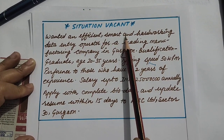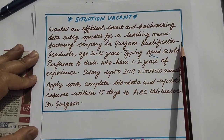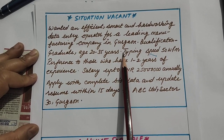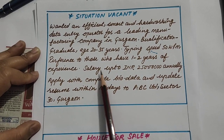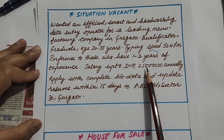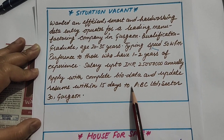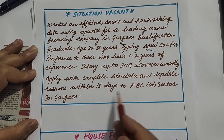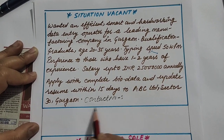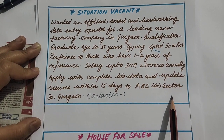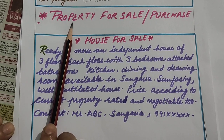Here is one more sample of situation vacant: Wanted, an efficient, smart and hard-working data entry operator for a leading manufacturing company in Gurgaon. Qualification: graduate. Age: 20 to 35 years. Typing speed: 50 words per minute. Preference to those who have one or two years of experience. Salary up to INR 25 lakhs annually. Apply with complete bio-data and updated resume within 15 days to ABC Limited, Sector 30, Gurgaon. Contact number to be added if given in your question.